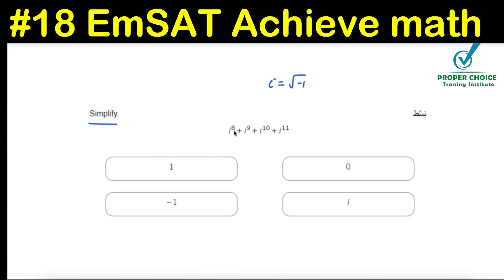consecutive numbers like 8, 9, 10, 11, or it could be consecutive even numbers like i to the power 2 plus i to the power 4 plus i to the power 6 plus i to the power 8, or even consecutive odd numbers like i to the power 1, 3, 5, 7, whenever we are adding 4 such terms, definitely we'll be getting the result as 0.